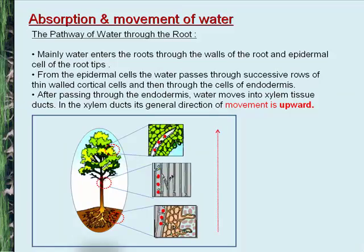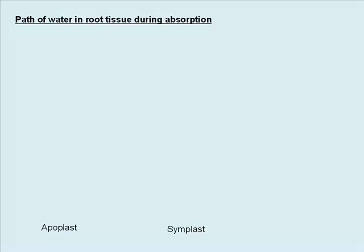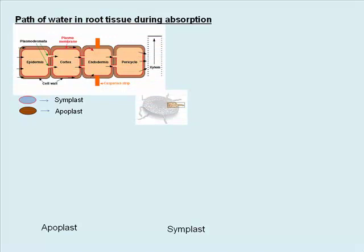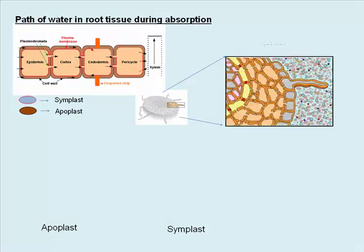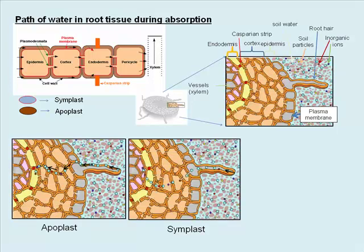Absorption and movement of water — pathway through the root: water mainly enters the root through the walls of the root and the epidermal cells of the root tips. From epidermal cells, water passes through successive rows of thin-walled cortical cells and then through the endodermis, after which it moves into the xylem tissue ducts where the general direction of movement is upward. This diagram shows the transverse section of the root, illustrating various parts such as root hair, epidermis, cortex, casparian strip, endodermis, and vessels.